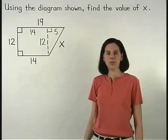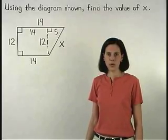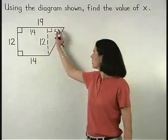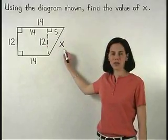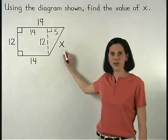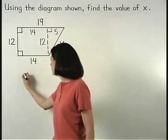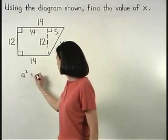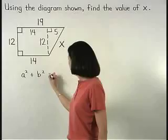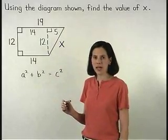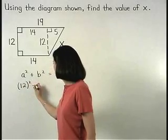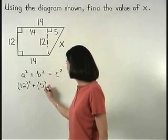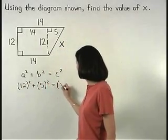The Pythagorean theorem states that the sum of the squares of the lengths of the legs of a right triangle is equal to the square of the length of the hypotenuse. Or a squared plus b squared equals c squared. So we have 12 squared plus 5 squared equals x squared.